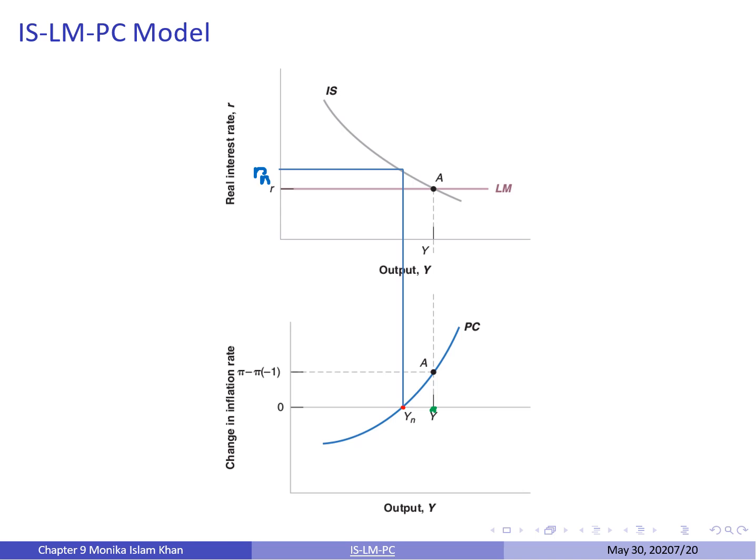The takeaway from this graph is: a lower policy rate leads to higher output, as shown by the top graph, and a higher output leads to a larger change in inflation, as shown by the bottom graph. We now have the two equations needed to describe what happens in the short and in the medium run.